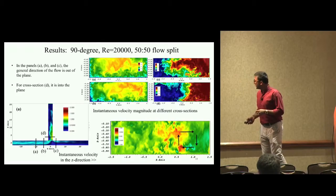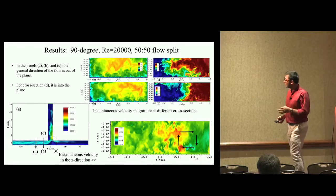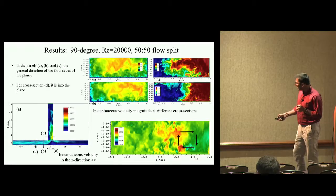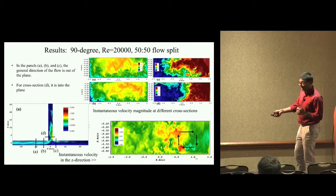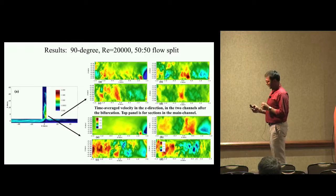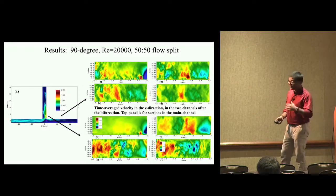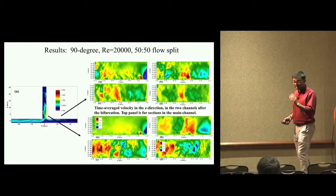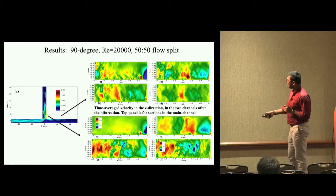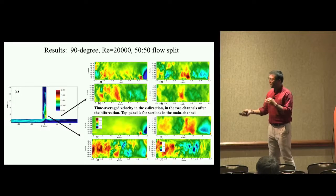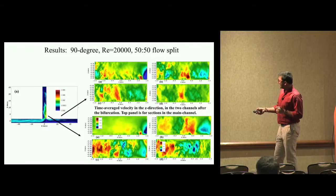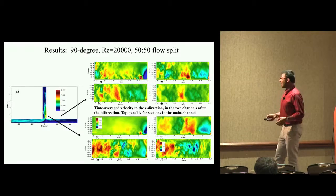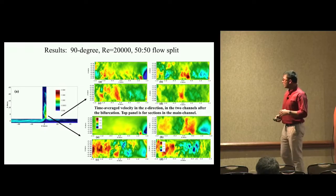Our hypothesis for why this is happening is that you need a pressure gradient to change the direction of flow into the side channel. It is easier to move anything which is moving slower than faster. Because the flow speed near the bottom is slower, that pressure gradient tends to take more of the flow from the bottom into the side channel. If we take a cross section and plot velocity in the z direction, we find formation of a secondary circulation. In the main channel, there is a counterclockwise rotating vortex, and in the side channel, a clockwise rotating vortex.